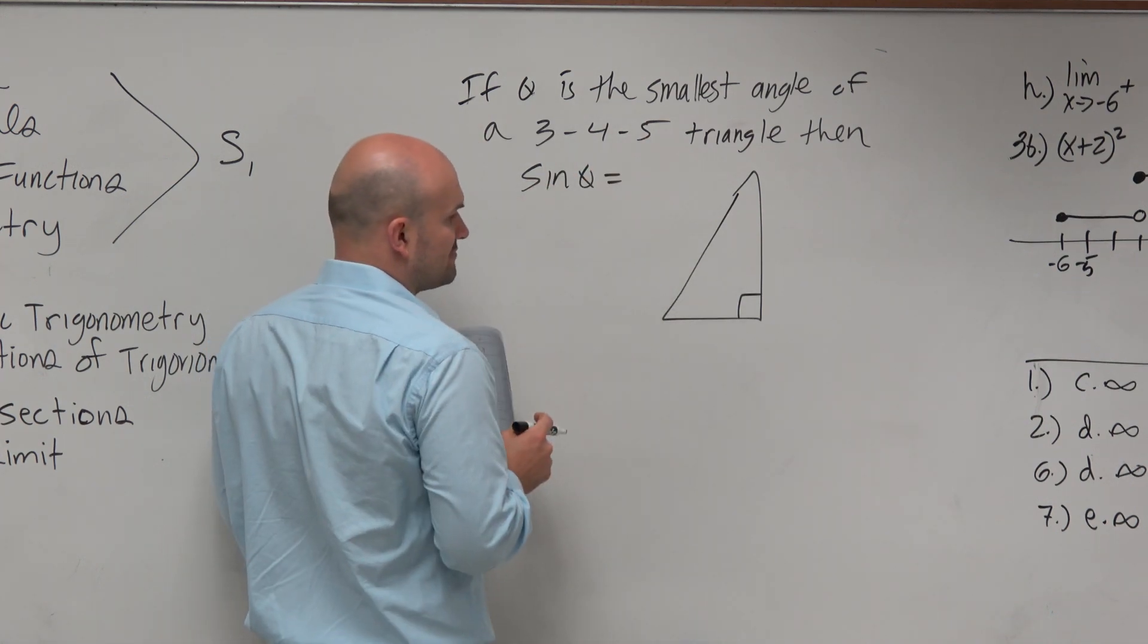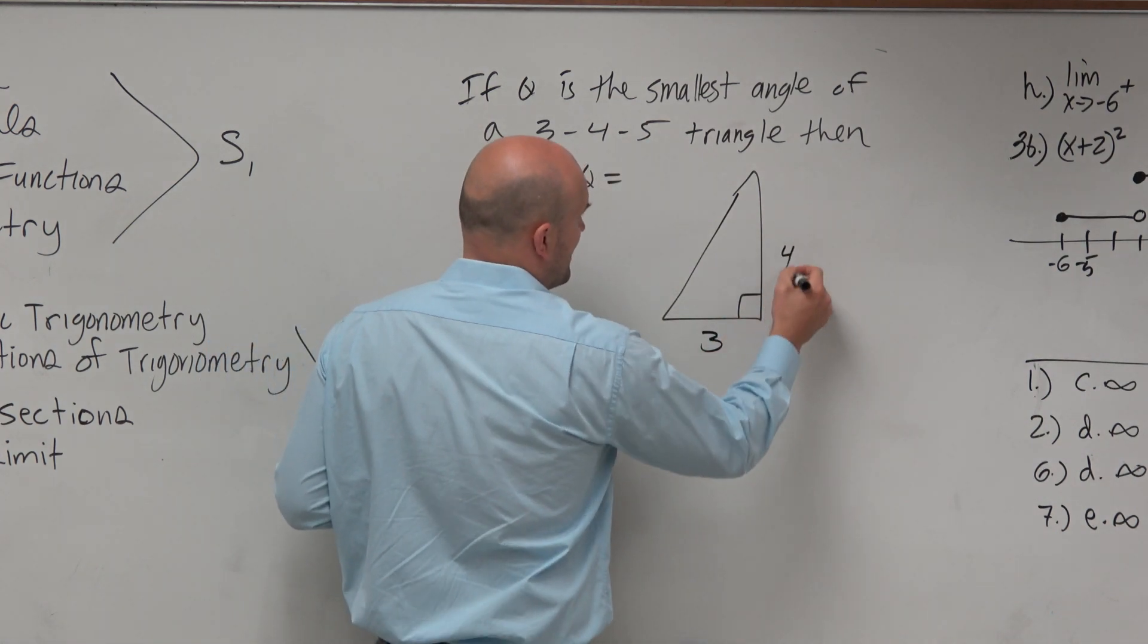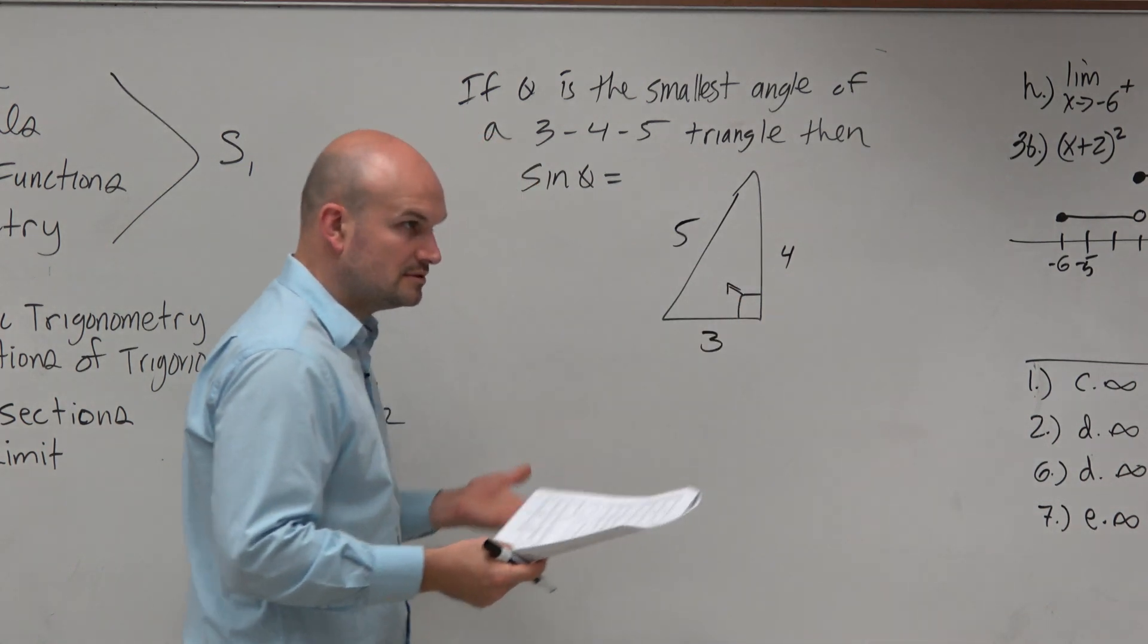So it's a 3, 4, 5 triangle. We know that 5 has to be the hypotenuse.